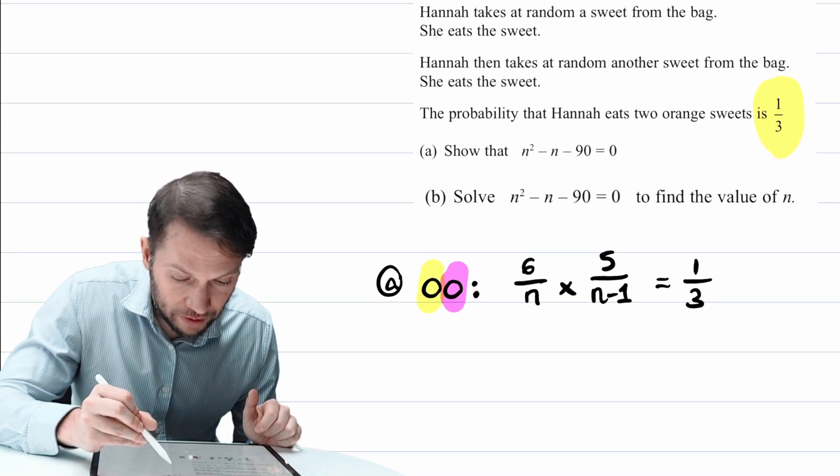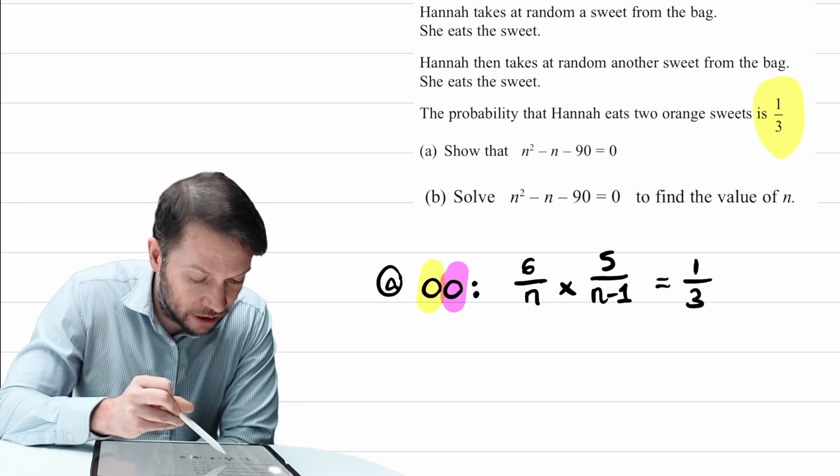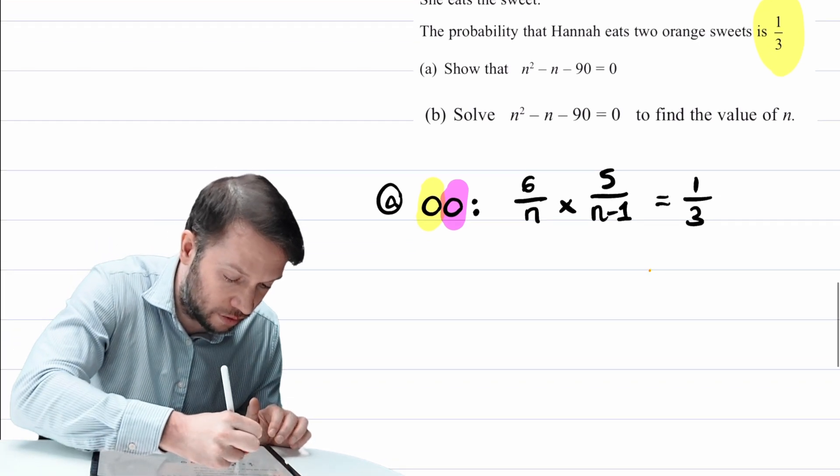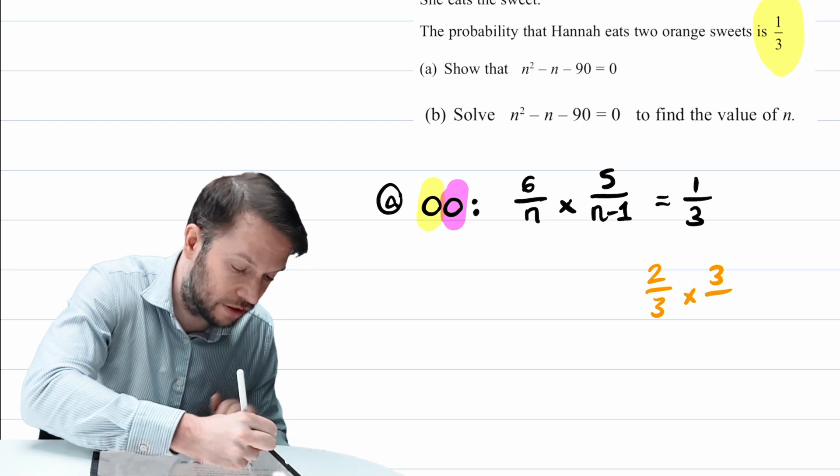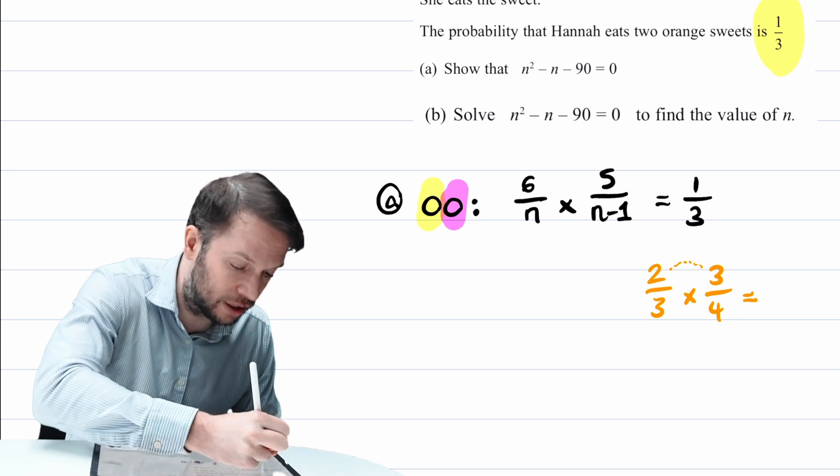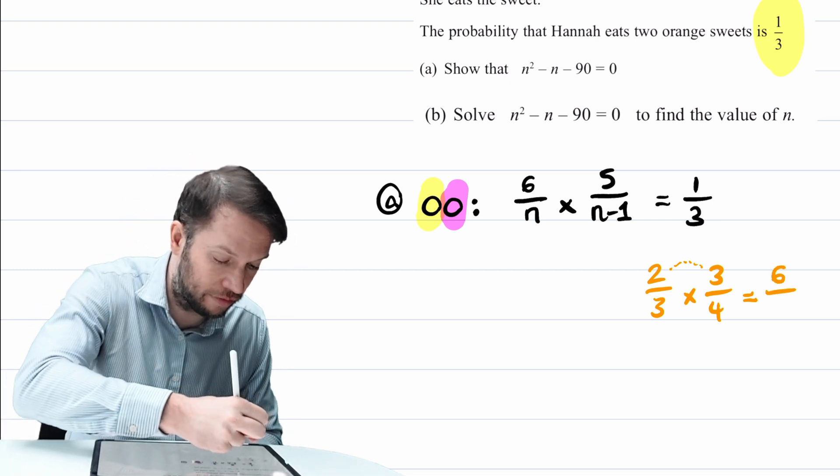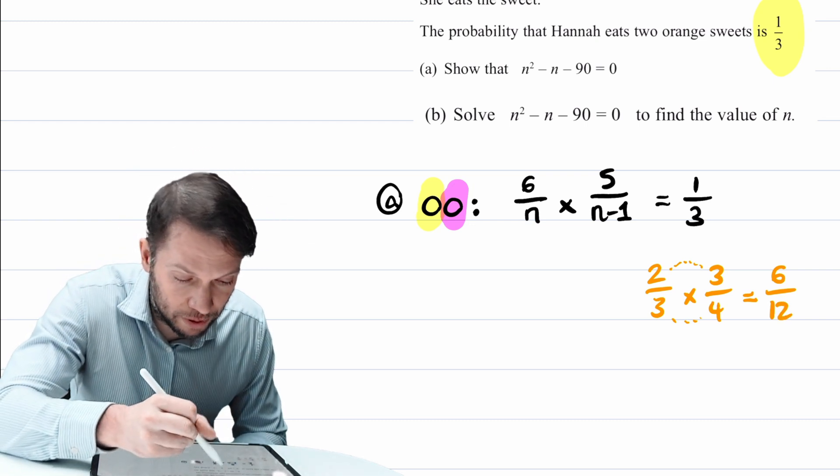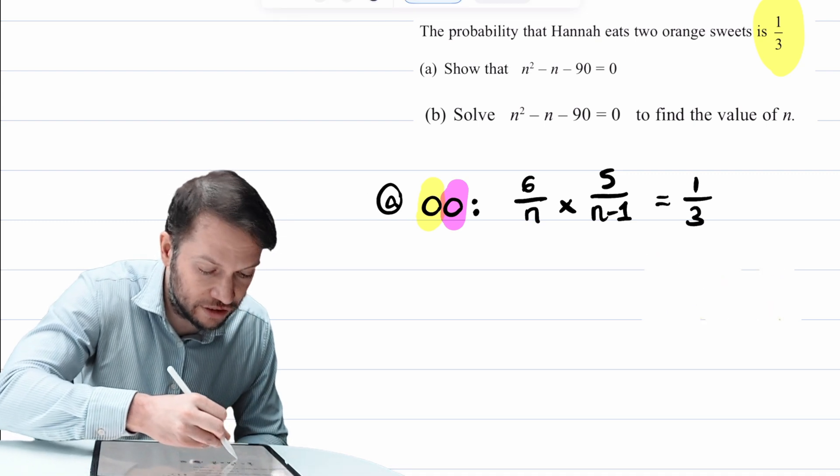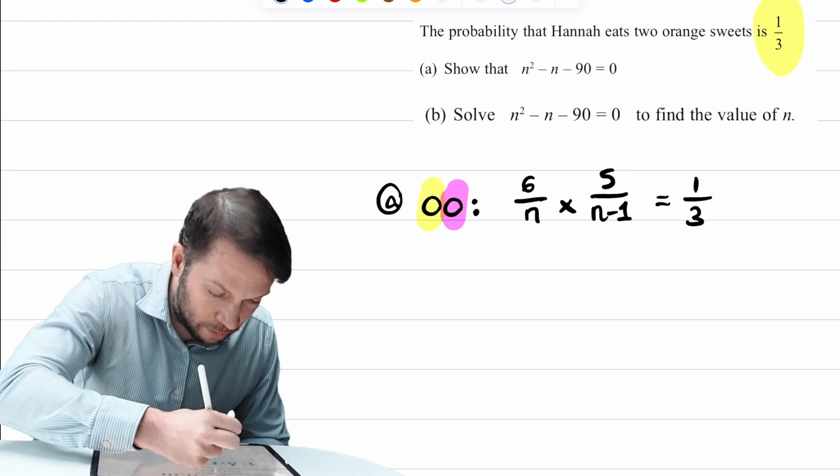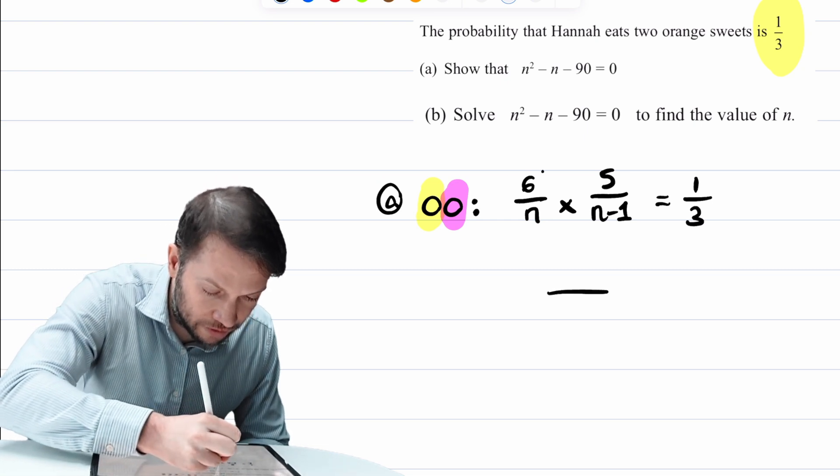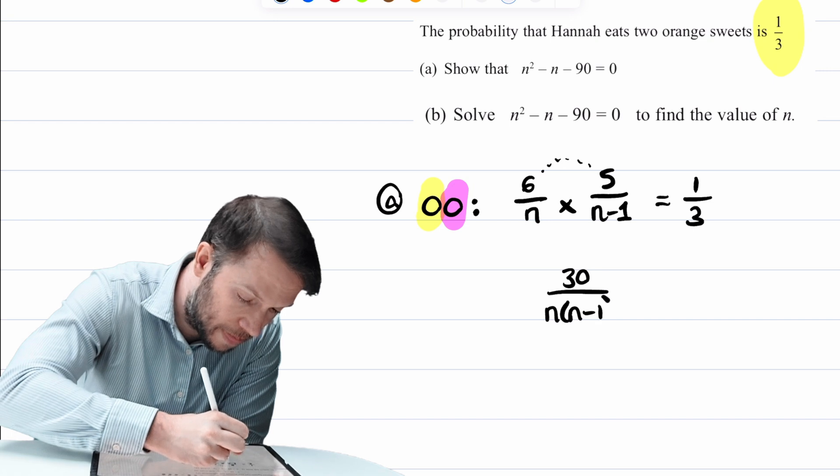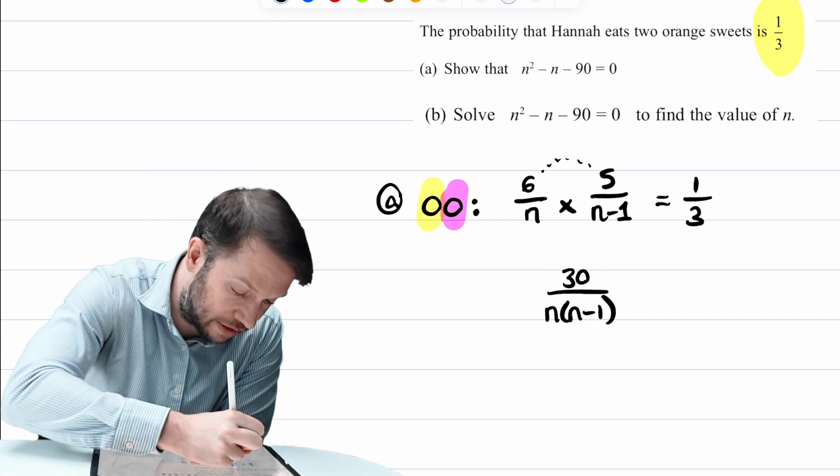So let's think how we might simplify this. The first thing to note is that we're multiplying two fractions together. You just multiply the numerators, and you multiply the denominators. So let's do that for the algebra we've got here. I'm going to multiply the numerators together. So we've got six times five is 30. I'm going to multiply the denominators together as well. So we've got n times n - 1. I'll expand that out in a second, and that's still equal to a third.